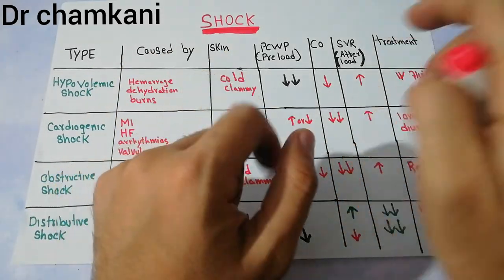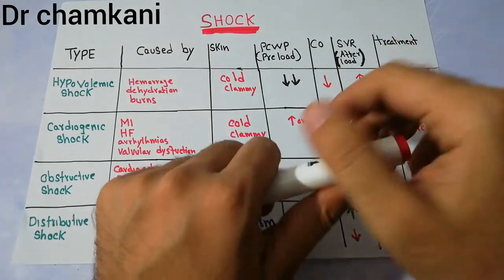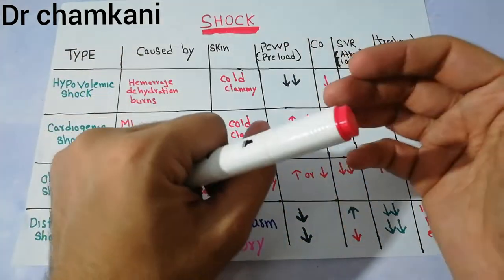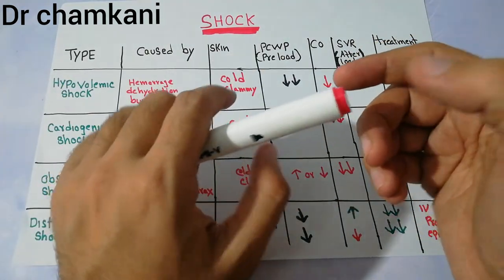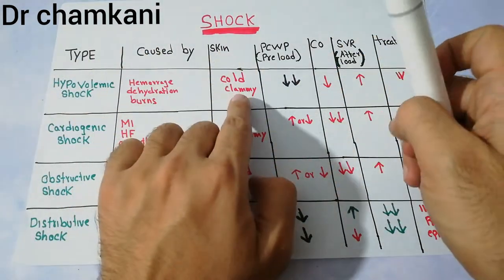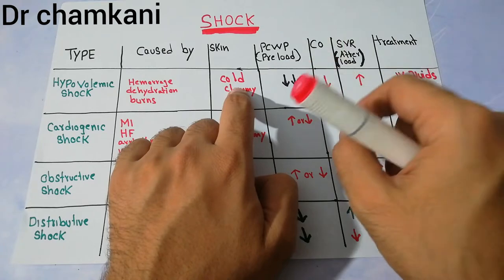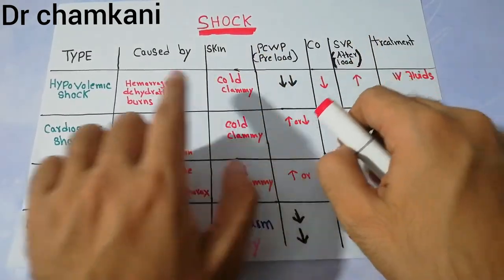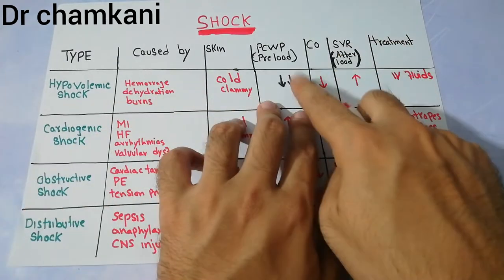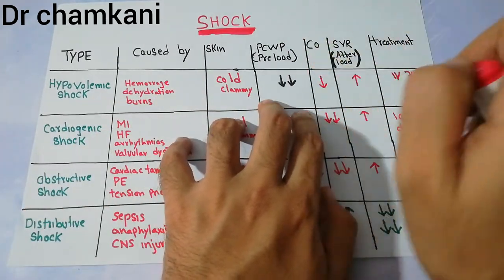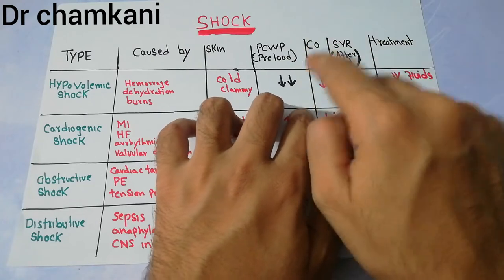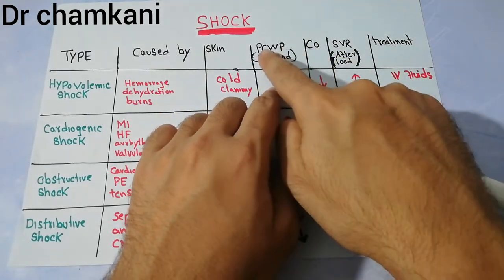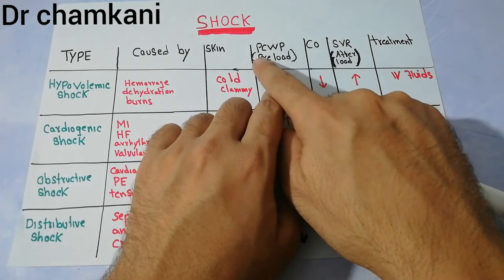Due to plasma loss, fluid loss, or blood loss, there is intense vasoconstriction. The body is trying to compensate and correct the shock. Due to this intense vasoconstriction, there is decreased blood flow to the periphery, so the skin is cold and clammy. Similarly, due to decreased volume, the amount of blood returning to the heart is very low. This is known as PCWP — pulmonary capillary wedge pressure — or preload.